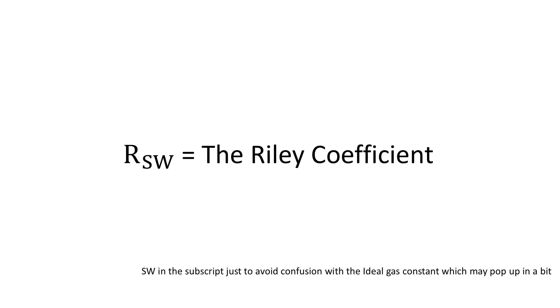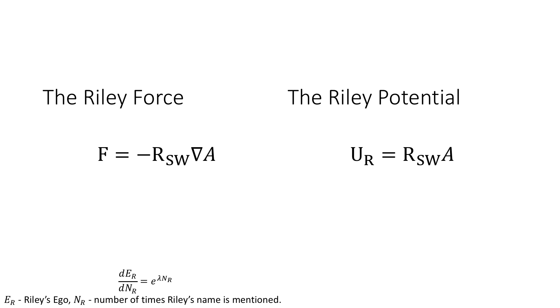So we have some coefficient and let's call it the Riley coefficient and we'll give it the symbol R sub SW, and it has the units described here. So rather than a proportionality we now have an equality which states that the force is equal to the negative of the product of Riley's coefficient and the gradient in the density difference.